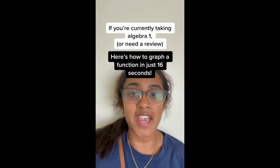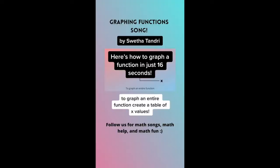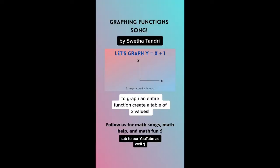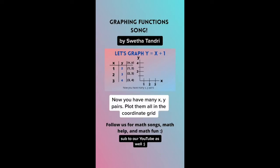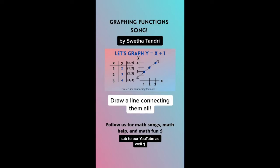Here's how to graph a function in just 16 seconds. To graph an entire function, create a table of x values. Plug in your x's into the equation to get your y's. Now you have many (x, y) pairs — plot them on the coordinate grid, then draw a line connecting them all.